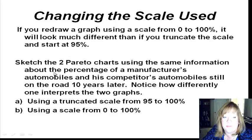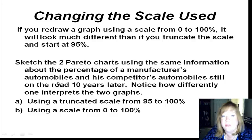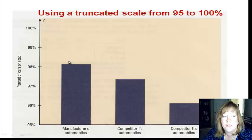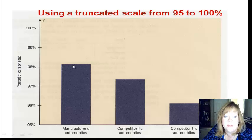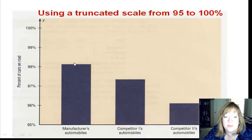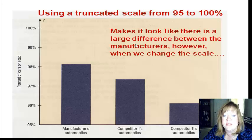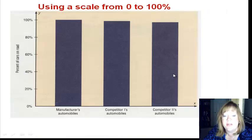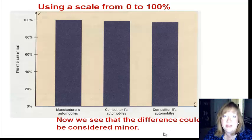Here's an example: percentage of manufacturers' automobiles advertised as having the most on the road for longer. Looking at the first graph, it looks like they are way ahead — this is using the truncated scale from 95 to 100%. Wow, what a difference, they are really doing a good job. But look at the scale: 95, 96, 97, 98% — it's only a 2% difference between the high and the low, but it visually looks dramatic. When we change the scale, they're very close together, and the difference between manufacturers could be considered pretty minor.